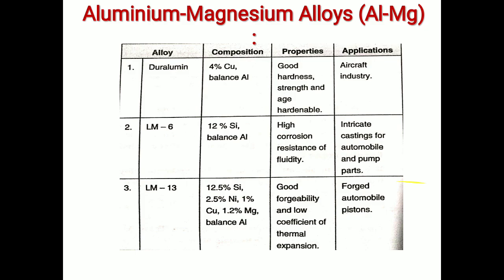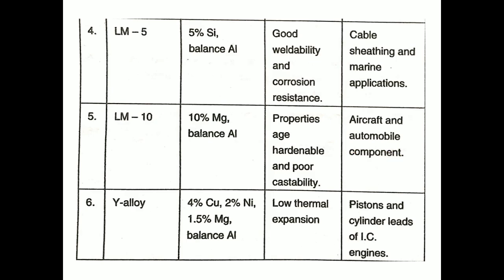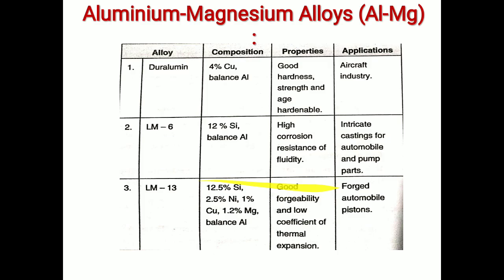Aluminium-magnesium alloys group includes Duralumin, LM6, LM13, LM5, LM10, and Y-alloy. Duralumin composition includes 4% copper with the balance aluminium, and it has good hardness, strength, and hardenability. Its application is in the aircraft industry.